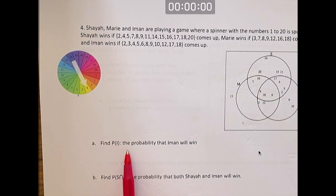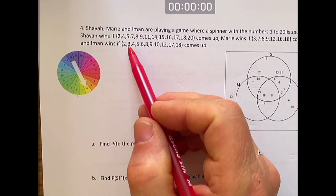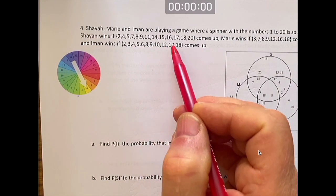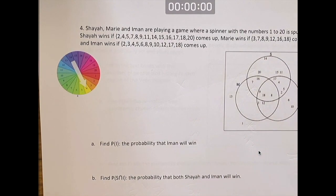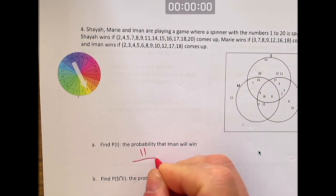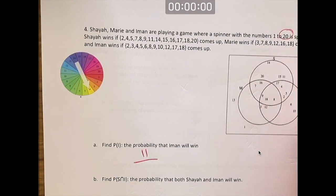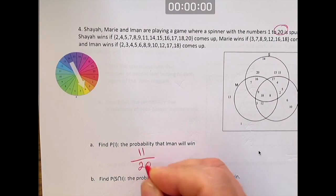Find P(I), the probability of I. That's the probability that Iman will win. So Iman wins if 2, 3, 4, 5, 6, 8, 9, 10, 11... There are 11 numbers where she wins out of a total number of 20. She wins 11 times out of 20, a little bit more than 50%.